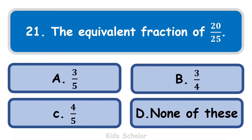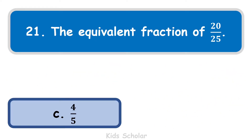Next question is: find the equivalent fraction of 20 by 25. Equivalent fraction means you have to convert the given fraction into its smallest term. When you simplify 20 by 25 into its smallest term, you get 4 by 5. So the correct answer is C, that is 4 by 5.